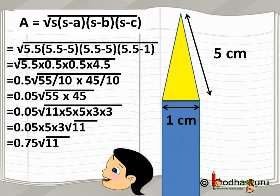Now, there are two 5s under the square root, so one 5 can come outside. Same way, there are two 3s under the square root, so one 3 can come out. What do we get? We get 0.05 multiplied by 5 multiplied by 3 multiplied by square root of 11.